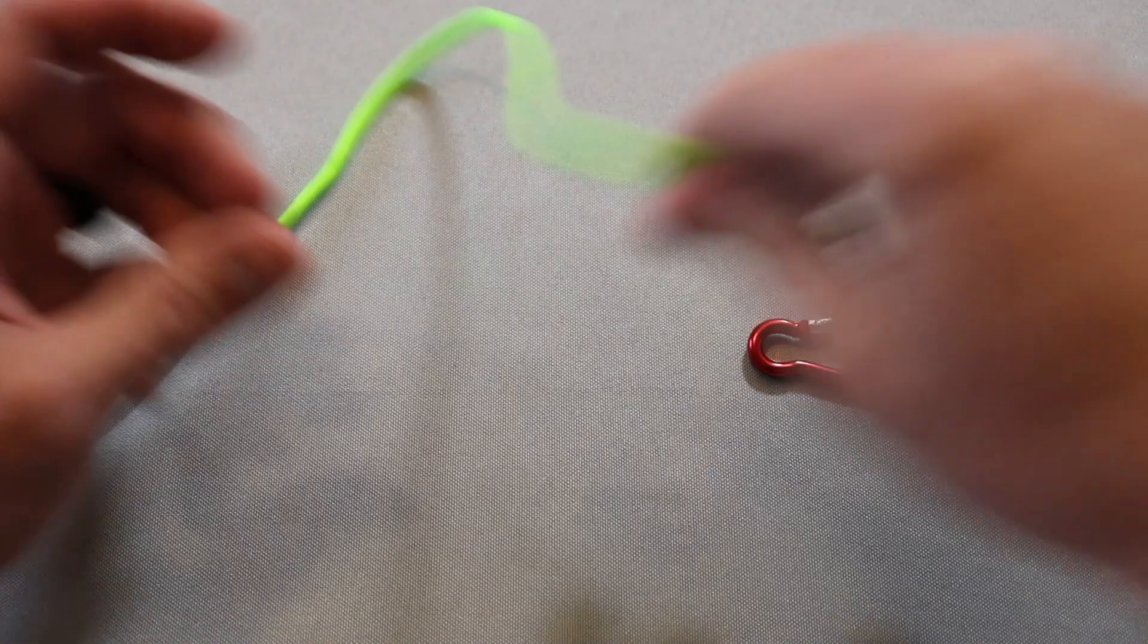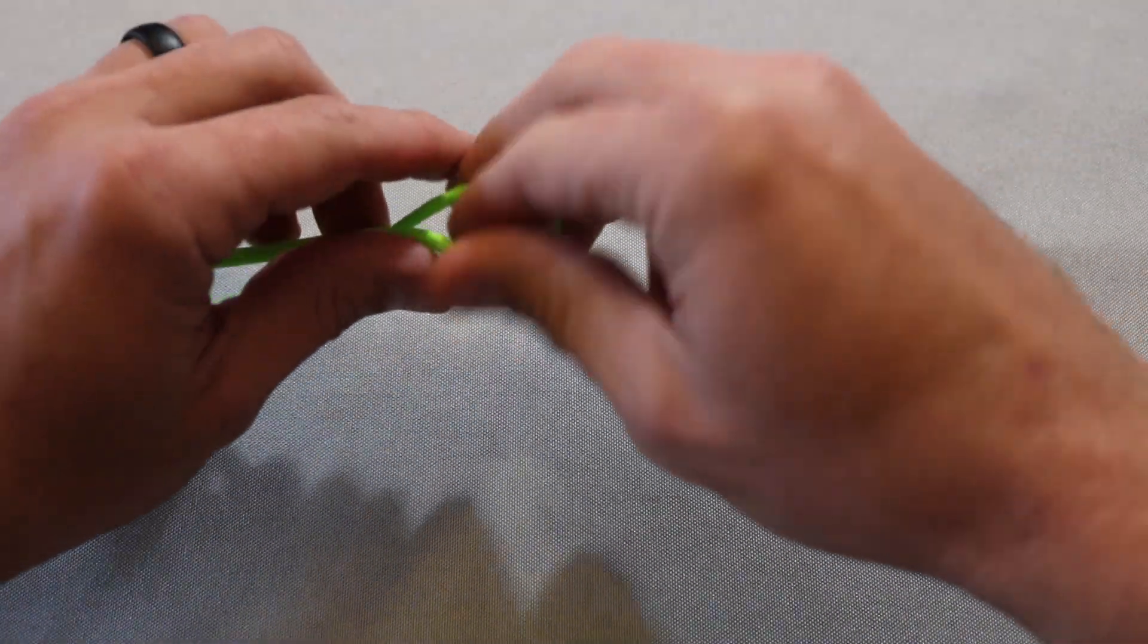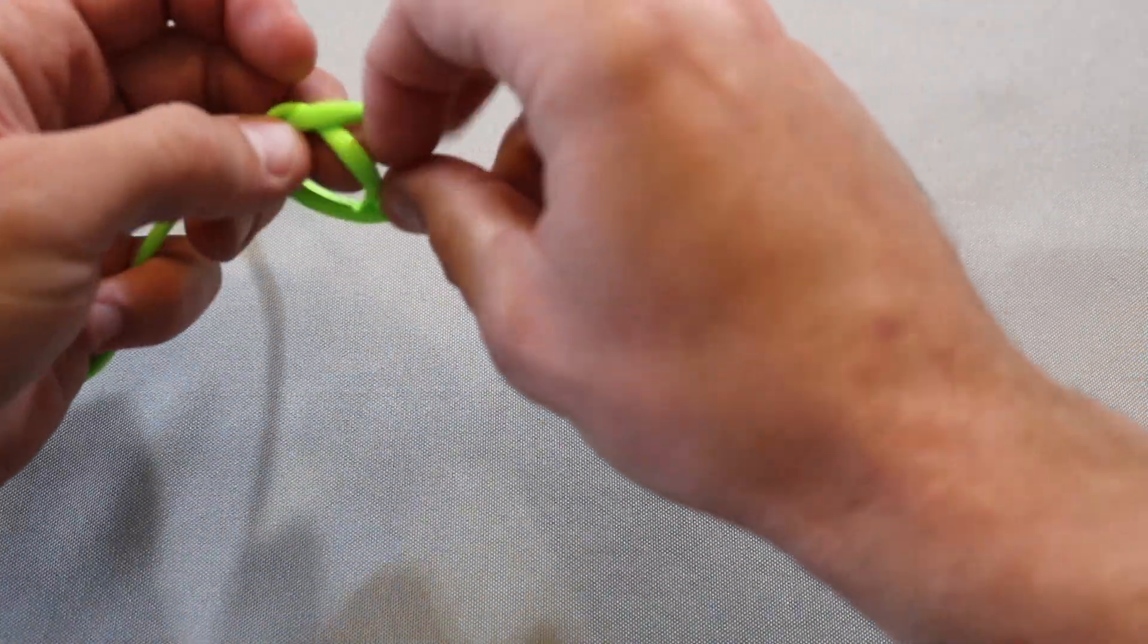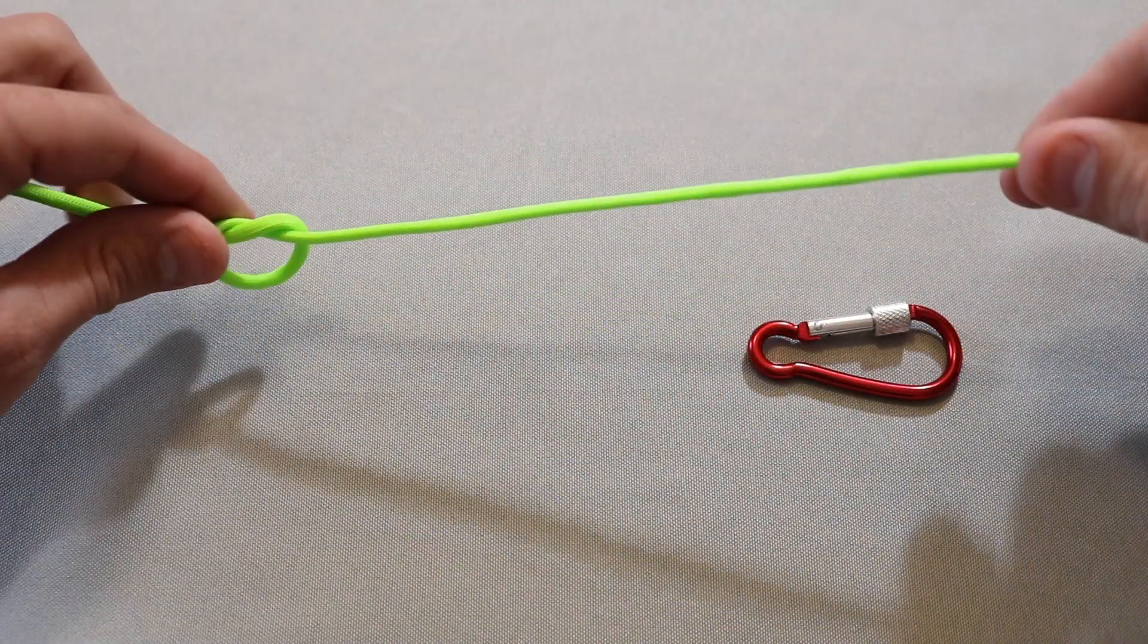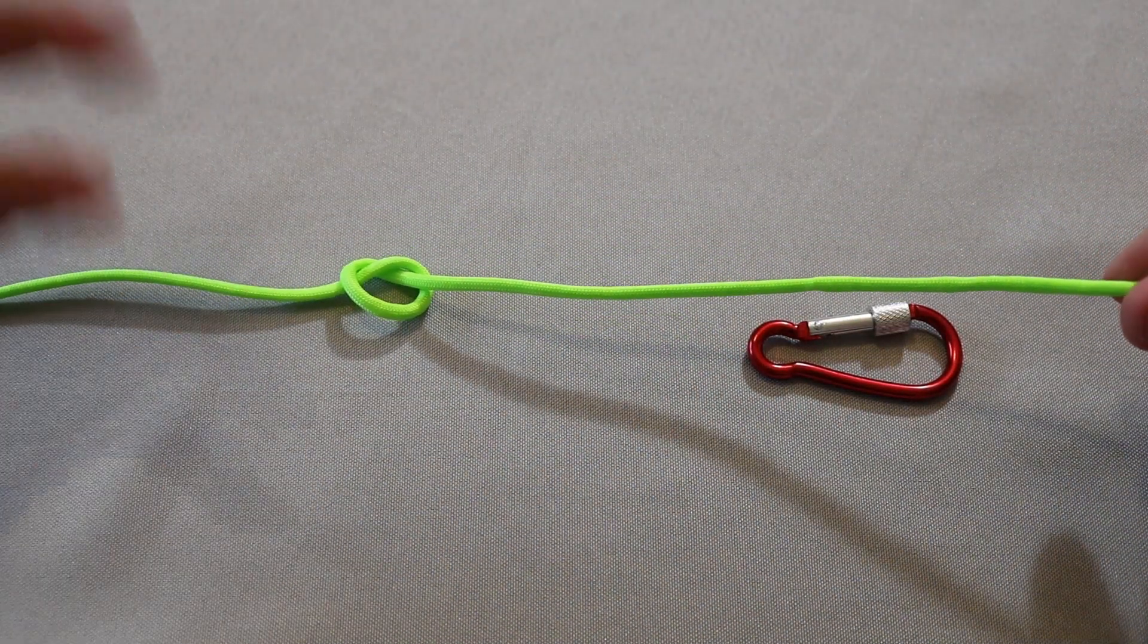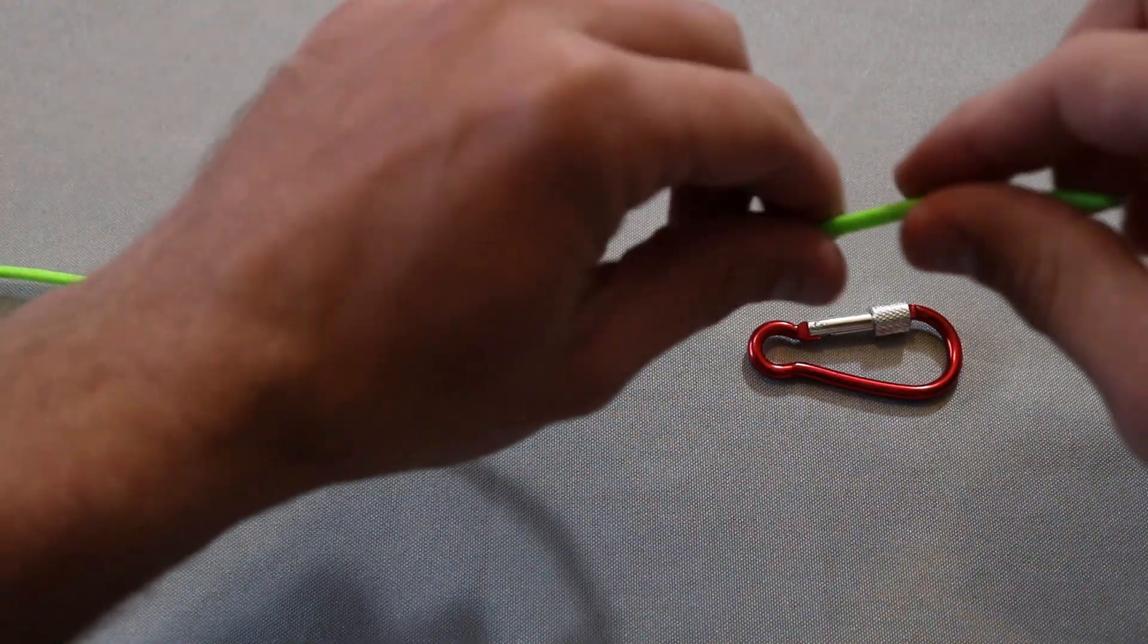So here you go. What you're going to do is start with an overhand knot. I like to go about six to eight inches above the end of my line, and then you're going to create an overhand knot just like that. So just a loop in your line.